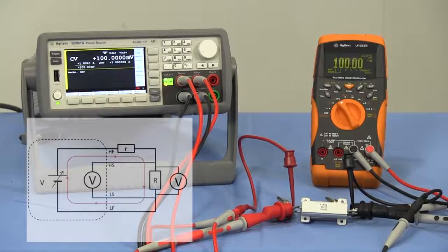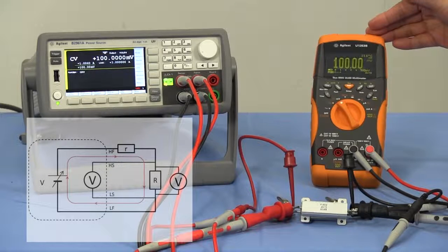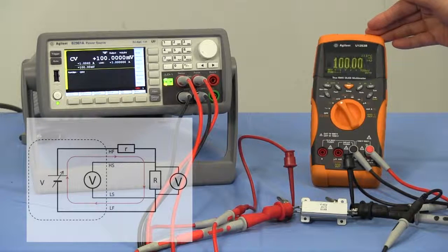As you can see, the voltage drop across lead resistance is compensated by remote sensing. The power supply can apply the voltage expectedly.